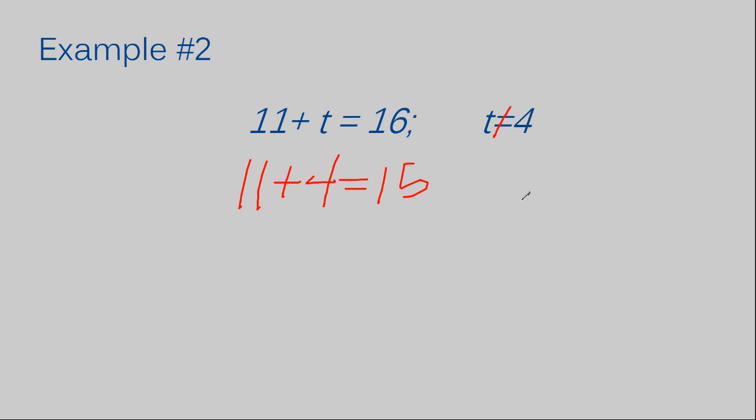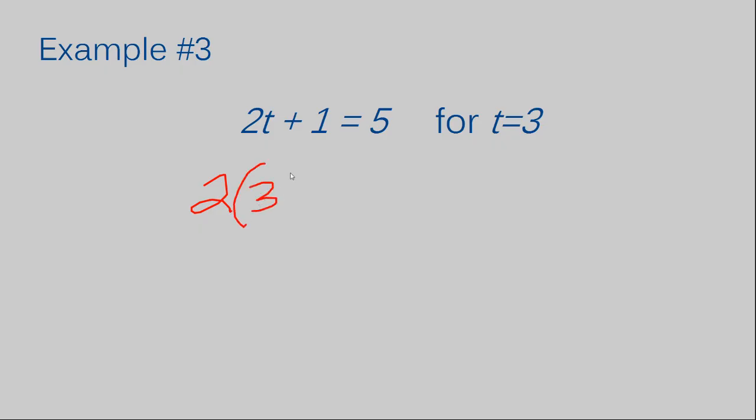So this is not a true statement. Let's move on to example number three. I have 2t plus 1 equals 5. I'm going to rewrite this. Instead of writing t, I'm going to write a 3. 2, put my 3 in, plus 1 equals 5.